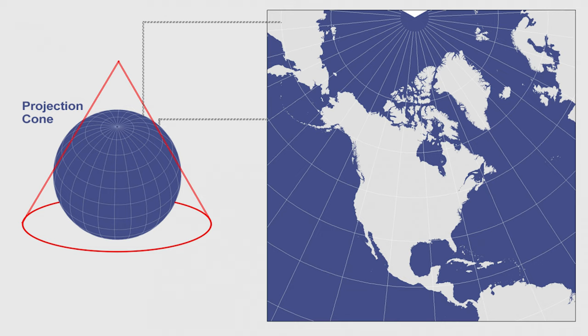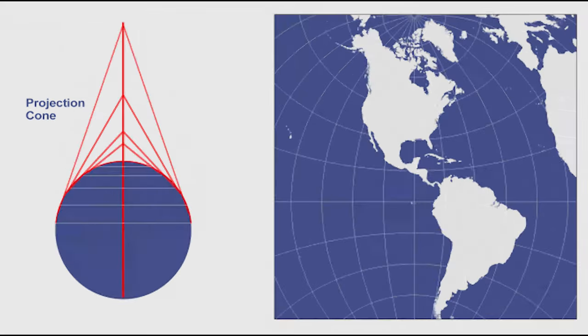It isn't equal area as distortion increases away from standard parallels. Polyconic Projection. This now obsolete map projection uses an infinite number of cones tangent to an infinite number of parallels. This type of projection is generally used for countries that span along a longitudinal extent.